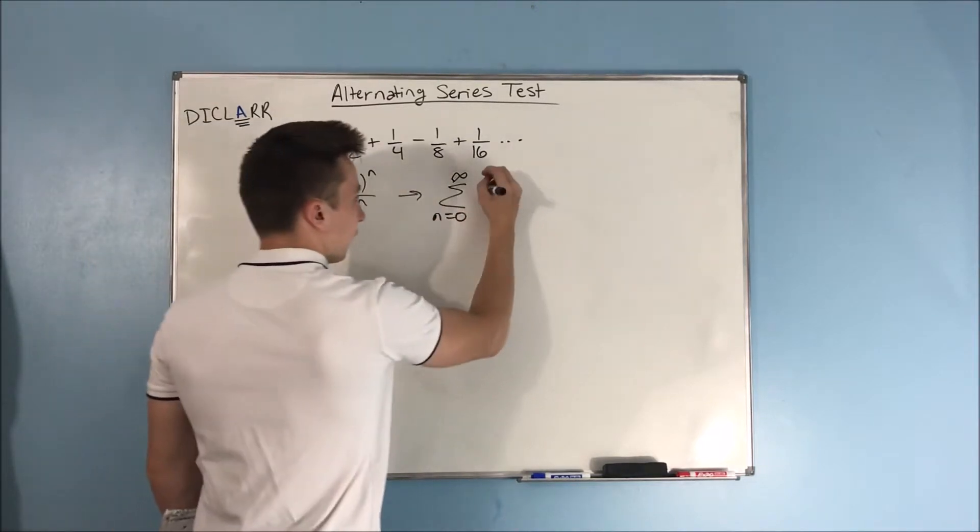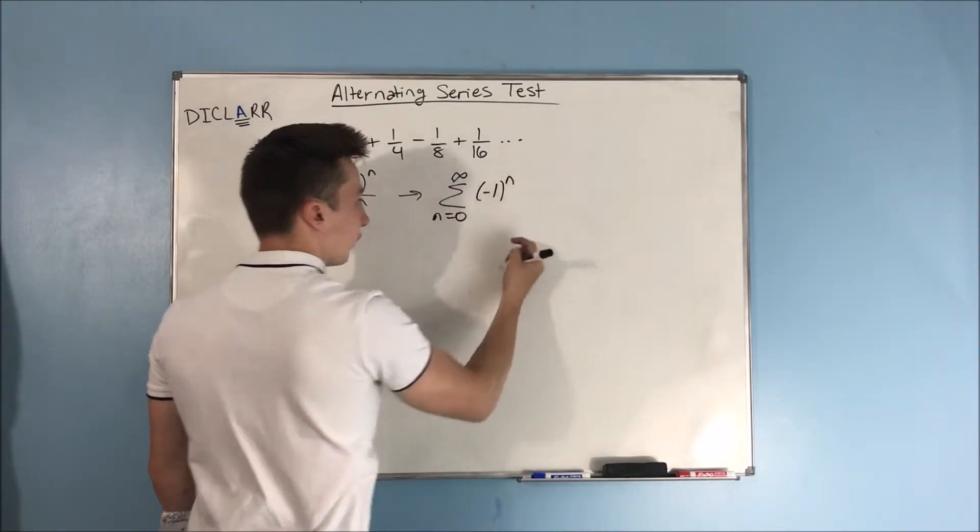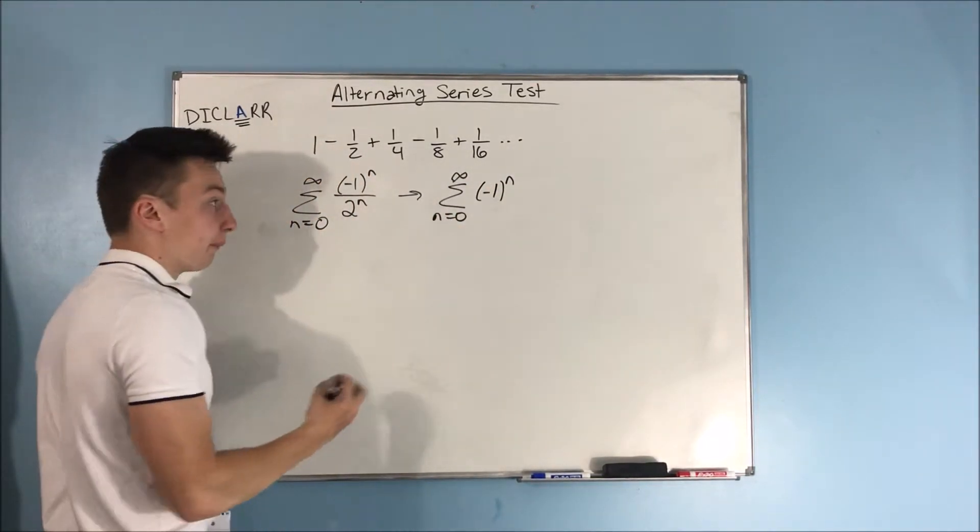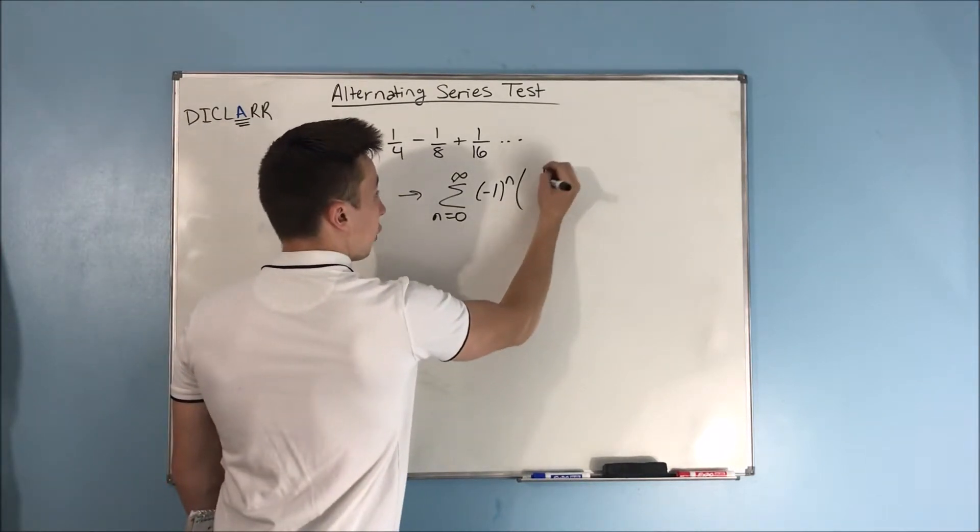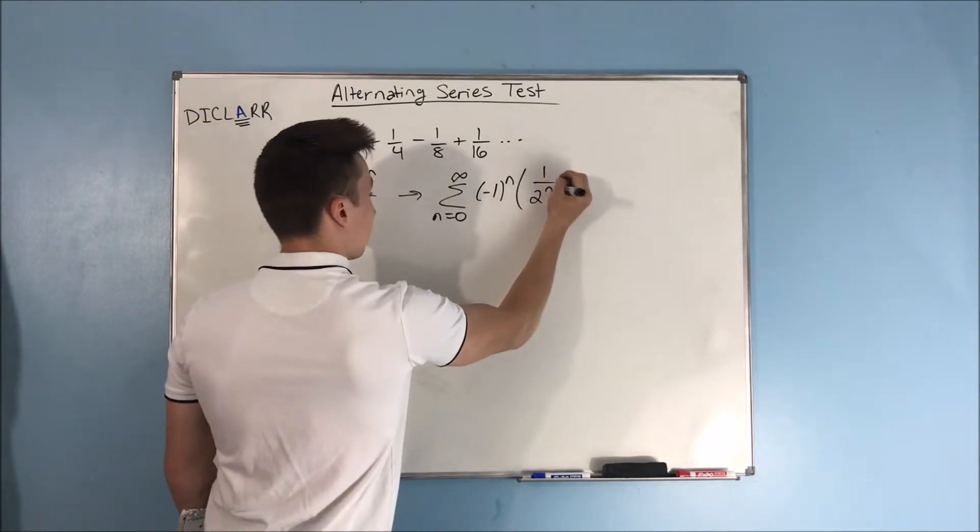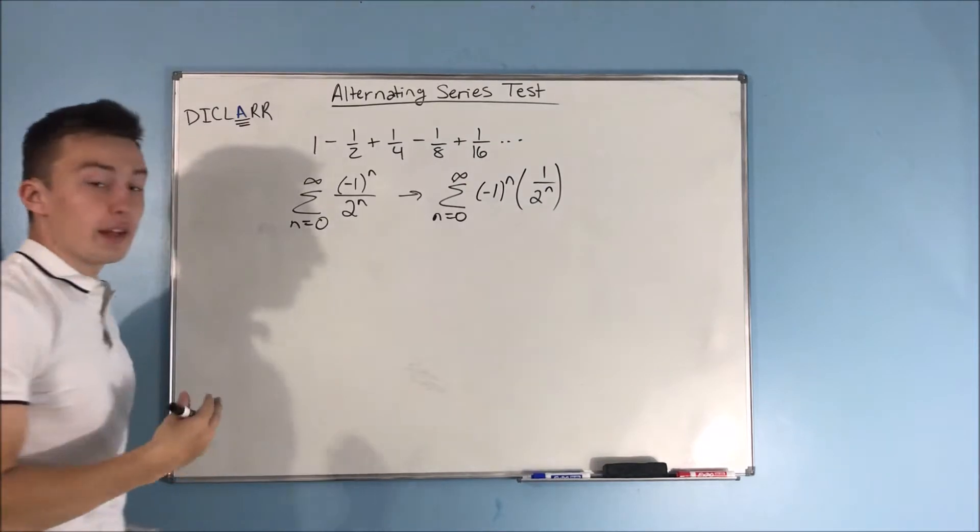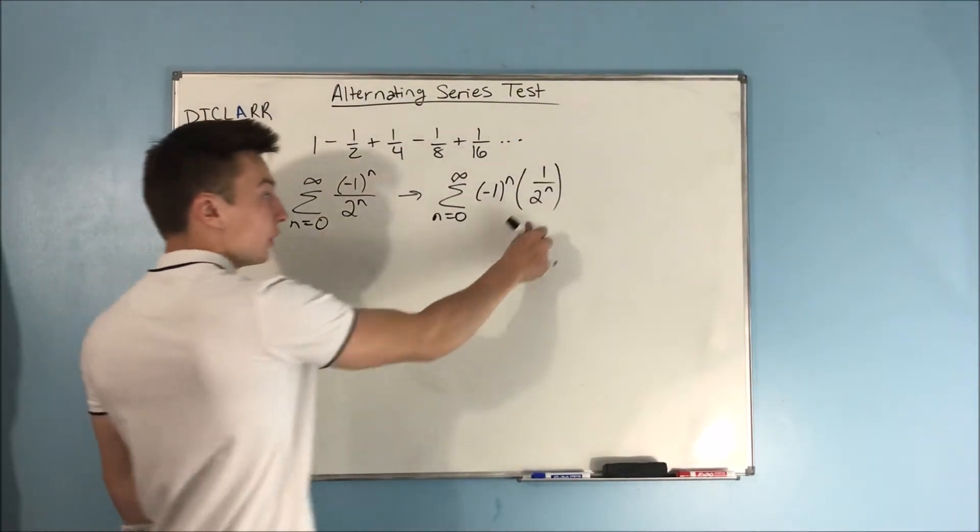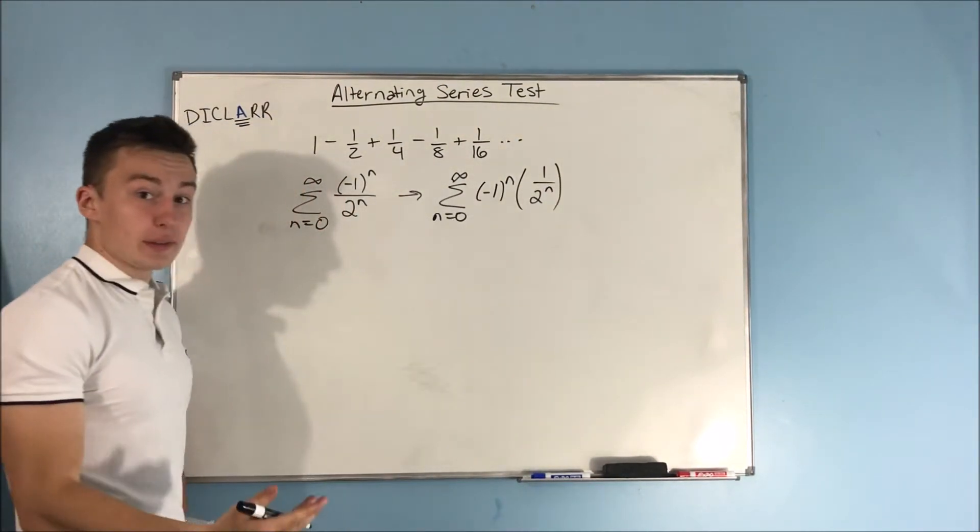And you'll be able to see this just fine once you kind of get used to this. But you have a negative 1 to the n, that's your alternating part. And that's going to be times your b sub n, which is everything else, which is that 1 over 2 to the n. Now, this 1 over 2 to the n, that's, of course, going to be greater than 0.